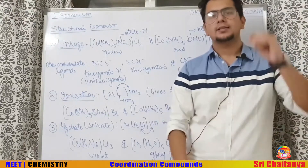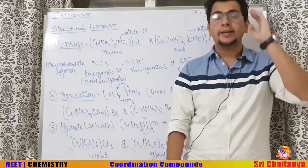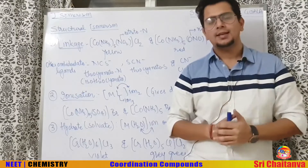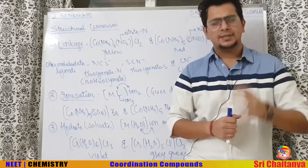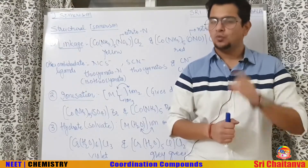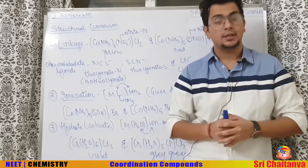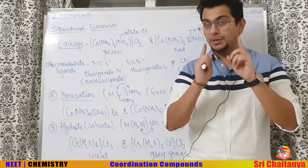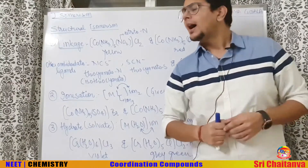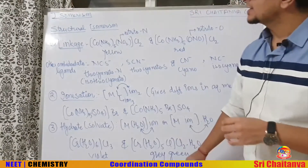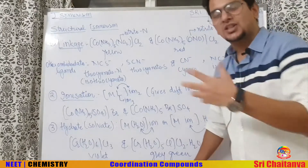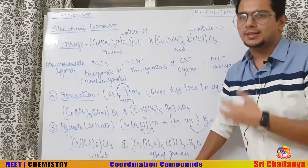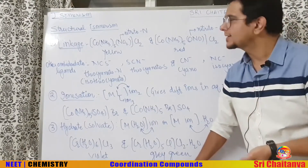Now I will discuss about the isomerism in complex compounds. There is a 99% chance that one question on this topic will come in NEET 2020, so be prepared. There are four kinds of structural isomers in the NEET syllabus. The first one is linkage isomers.